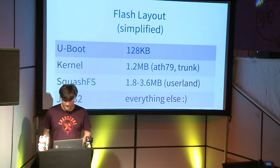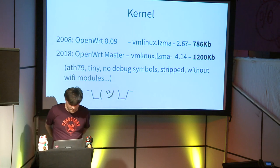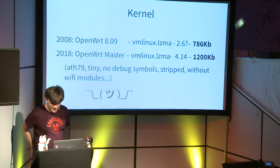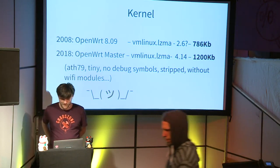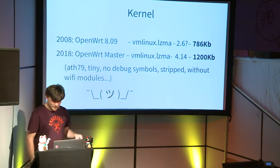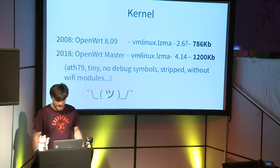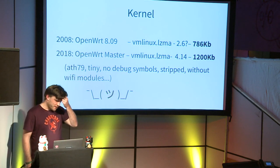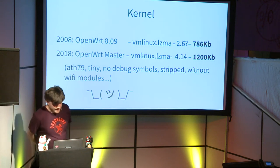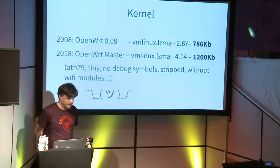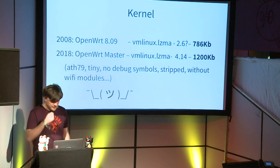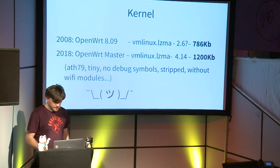Our idea is to look at everything — kernel, SquashFS — to see where we can save space. Looking at the OpenWRT archive, the 2.6 kernel was about 780 kilobytes compressed, and the current kernel is around 1,200 kilobytes, maybe even bigger. This is already the version from the new master target ATH79, which already has good compression, no debugging symbols, and no Wi-Fi modules included since they are loaded as external modules.